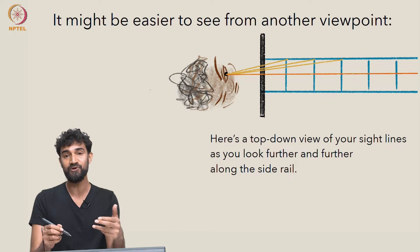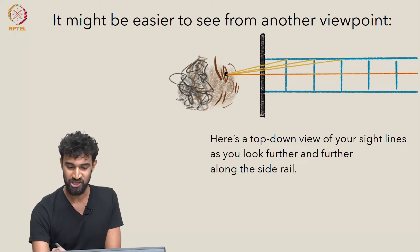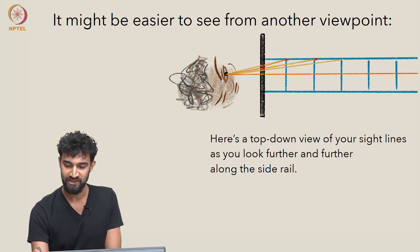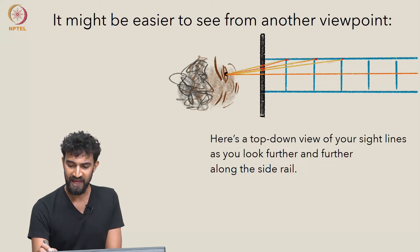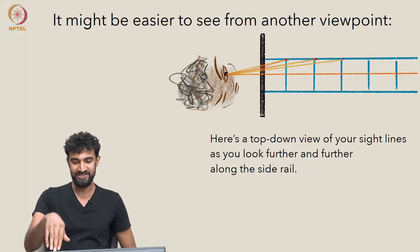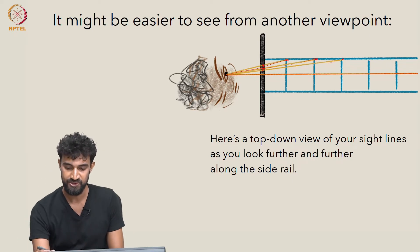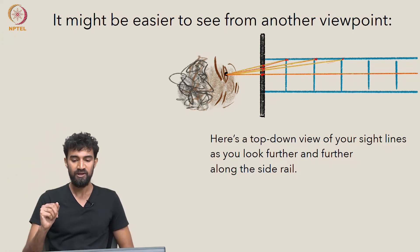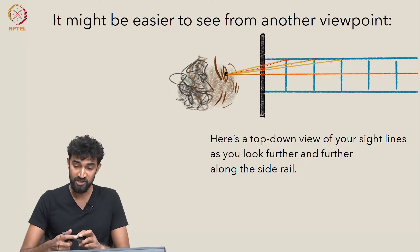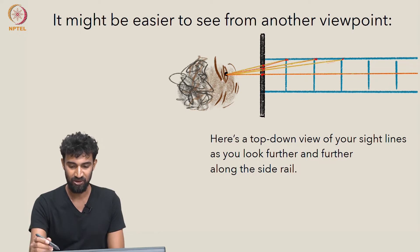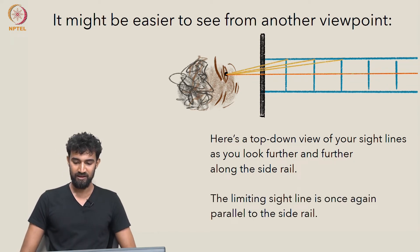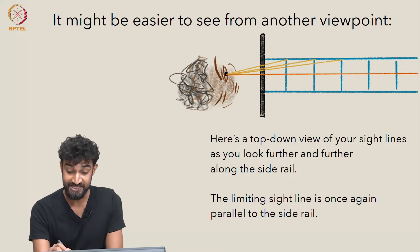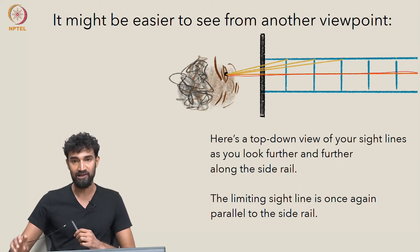It might be easier to understand from a different viewpoint. Here's a top-down view of the sight lines as you look further and further down the railway tracks. You can see that at each railway tie, you create a successive image point, and from the top-down view these image points are coming closer and closer to a center point. We can't see them rising up since it's a top-down view, but they are clearly approaching a limit.